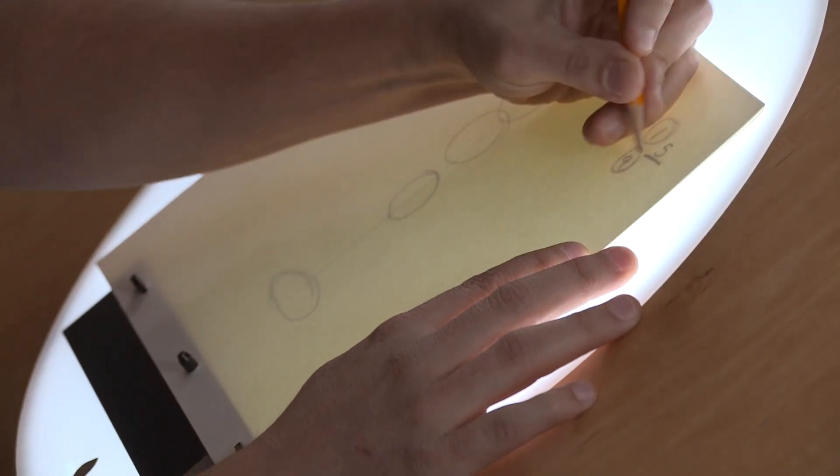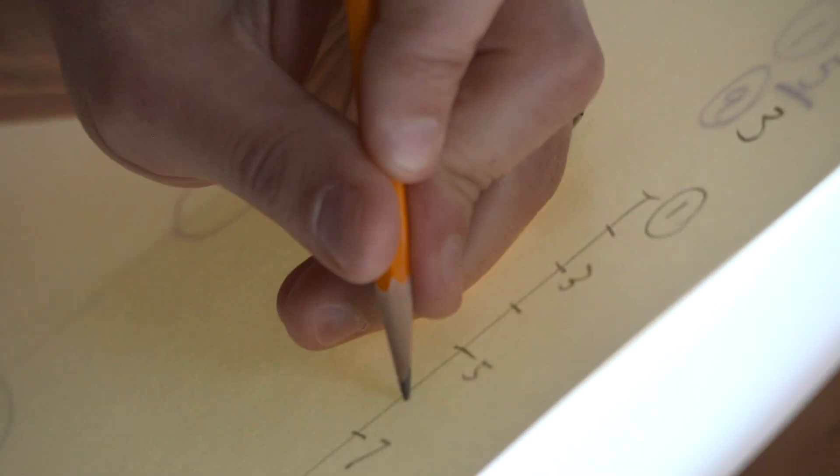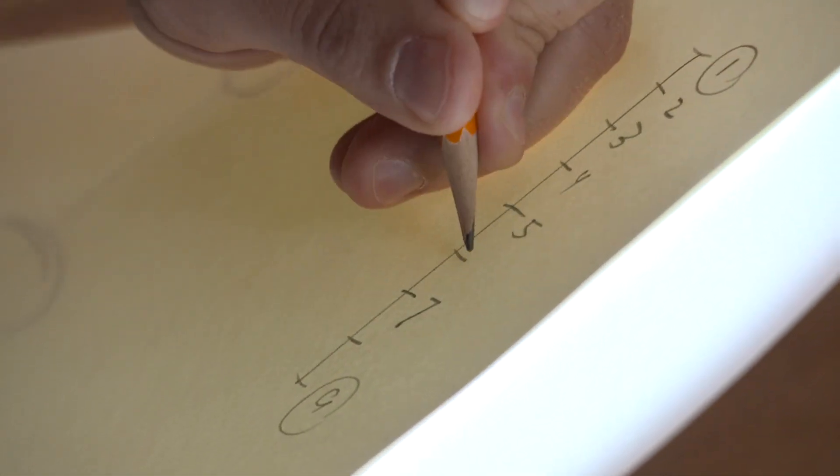Now I can keep adding more frames subdividing the space. Sometimes it helps to make a little chart to keep track of all the numbers.